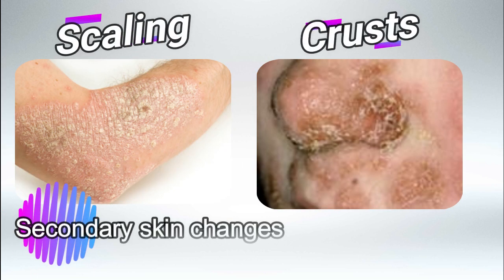One of the most important secondary skin lesions are scaling and crusts. Scaling is thickening of the outer layer of the skin, and crusts are dried pus, dried bullae, or dried fluid on top of an erosion or on top of the skin.